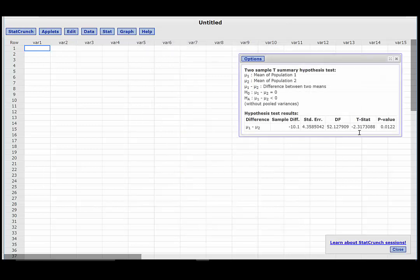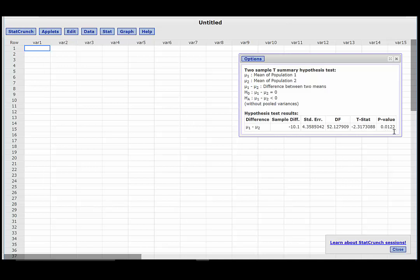Now click compute. We find a t-statistic of minus 2.32 and a p-value of 0.0122. So the test value is minus 2.32 and the p-value is 0.012.